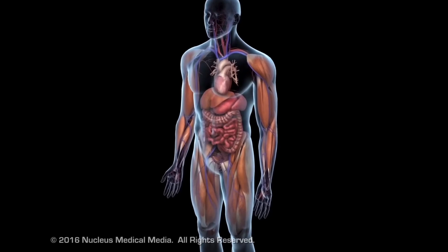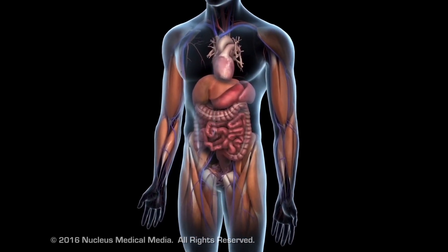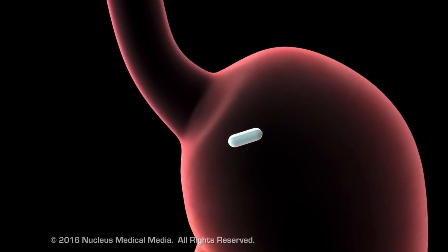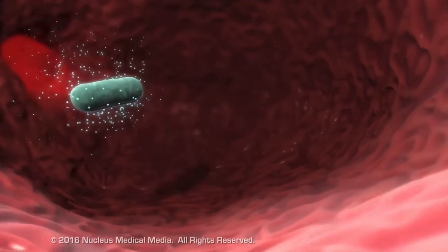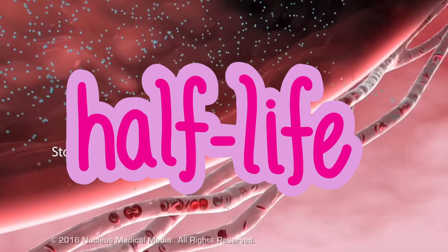Once administered, the body starts changing the Tylenol into other chemicals in the liver, and then the kidney starts taking those chemicals out of the blood. The more medicine there is in the body, the faster it is removed, at least up to a certain level. This is what gives rise to the half-life idea of medicine removal.